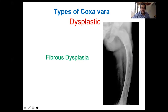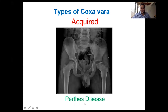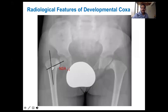The dysplastic coxa vara is due to an underlying bone pathology. The last type is fibrous dysplasia with the shepherd's crook deformity of the proximal femur. There is also the acquired type, acquired after trauma — for example, a fracture of the neck of the femur that heals in a malunited position — or avascular necrosis due to Perthes' disease, or post-septic after neonatal sepsis affecting growth of the proximal femur.